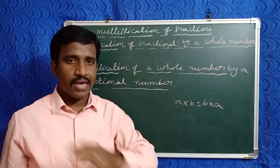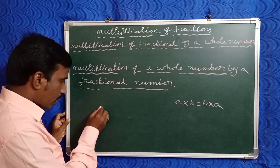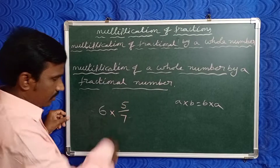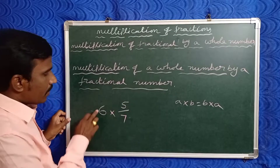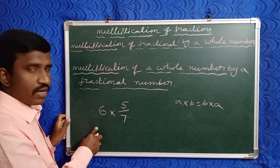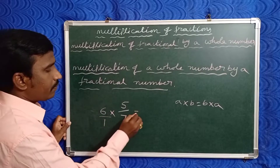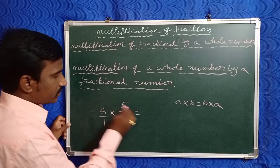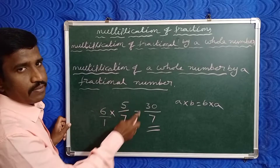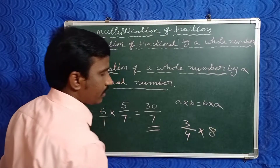In this case, take the whole number six multiplied by the fraction five by seven. First, multiply the numerator with the whole number and write the same denominator. Alternatively, write the whole number as a fractional number: six by one. Now multiply numerators and denominators: six into five is thirty, by one into seven is seven. So six into five by seven means thirty by seven.